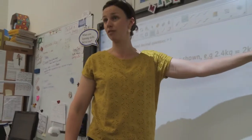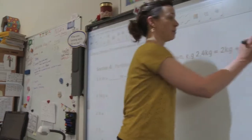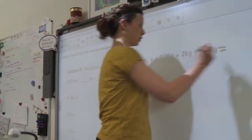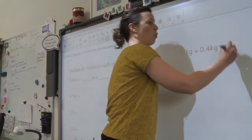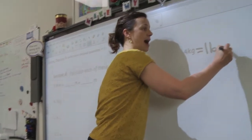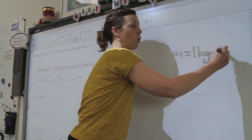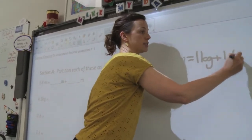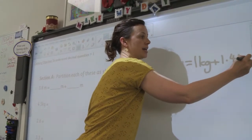So for 2.4 kilograms, I can partition it as 2 kilograms and 0.4 kilograms, but I might also write it as 1 kilogram and 1.4 kilograms.